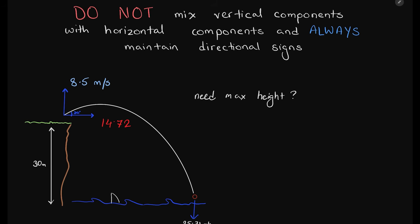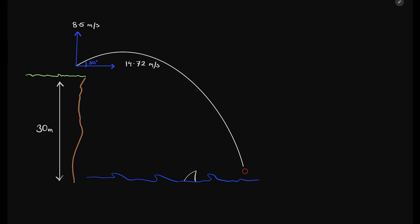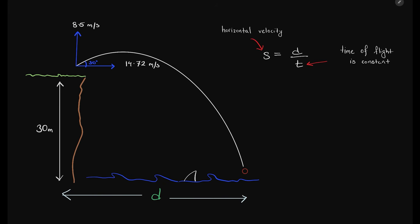Do you need to find the maximum height? Use vertical velocity. Do you need to find the distance traveled? Use horizontal velocity. Always use vertical components for vertical calculations and horizontal components for horizontal calculations. If the question asks for the range of the projectile, or how far the ball traveled, remember that horizontal velocity is not affected by acceleration, so we can use the normal formula: speed = distance / time. The time of flight is constant for both vertical and horizontal motion. Using this, the answer comes out to be 51.37 meters.